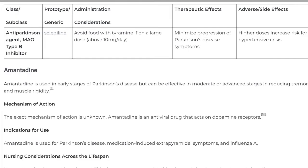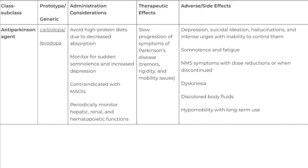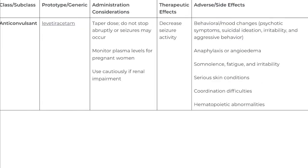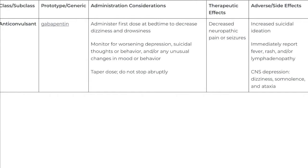Parkinson's disease is a progressive disease of the nervous system that impairs one's ability to move. The typical onset is in the middle to later stages of life. The disease worsens over time and has no cure. The cause is unknown, but it is characterized by a loss of dopaminergic neurons.